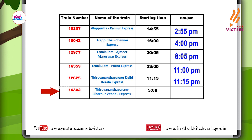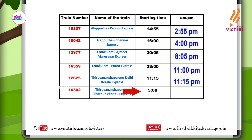Now friends, look at the last one. Train number 16302, Thiruvananthapuram Shornur Venad Express. What is the starting time? It is five hours in railway time. How will we write it in twelve-hour clock? Five hours is between twelve midnight and twelve noon. So we can write five hours in twelve-hour clock as five AM.